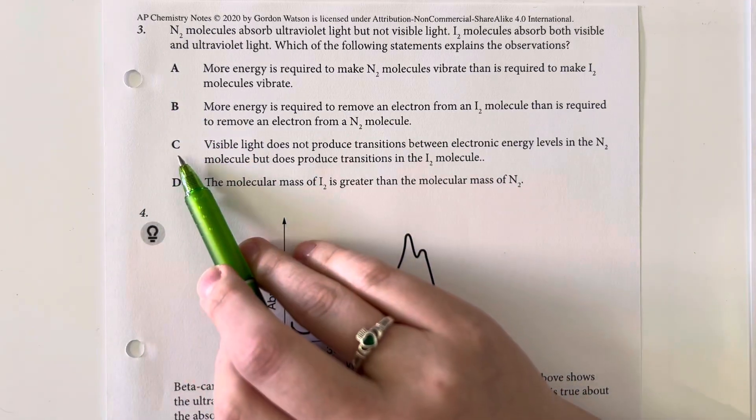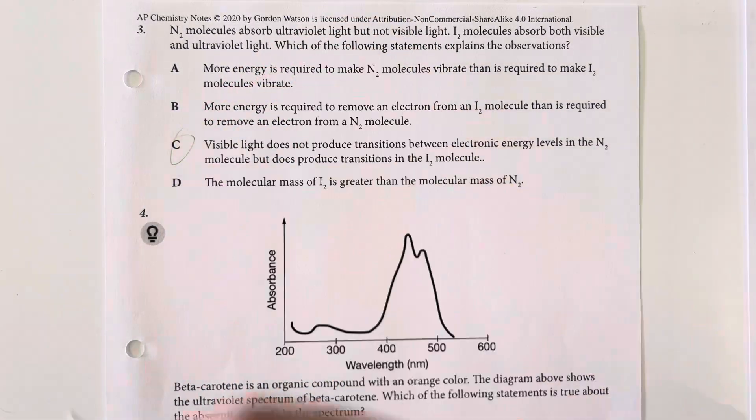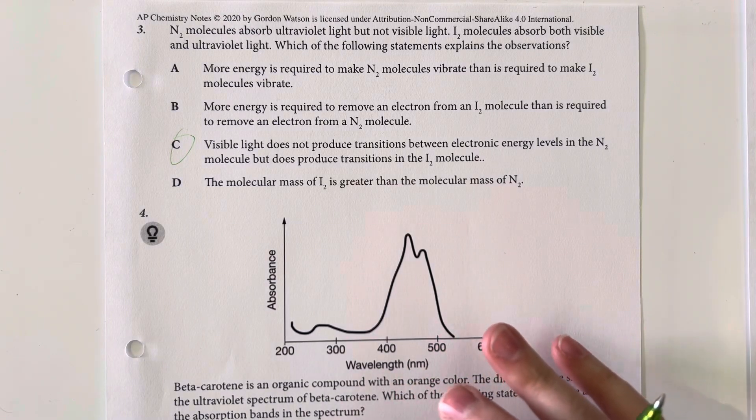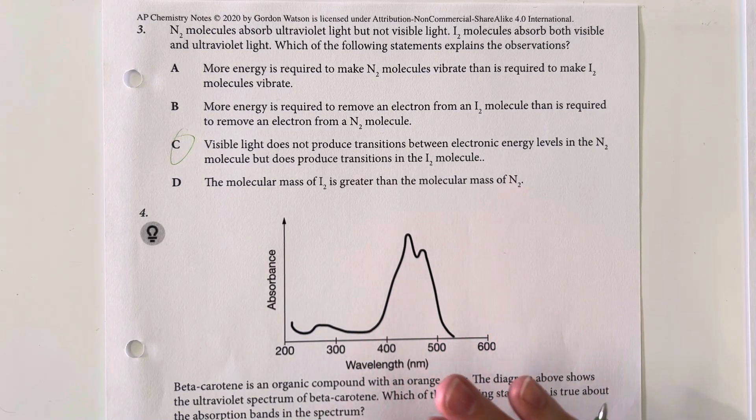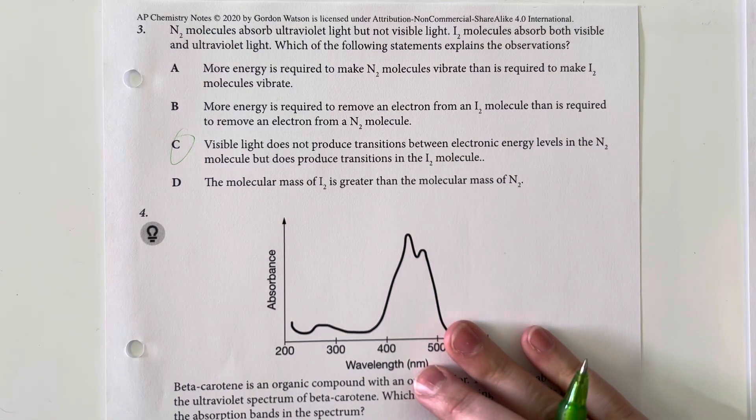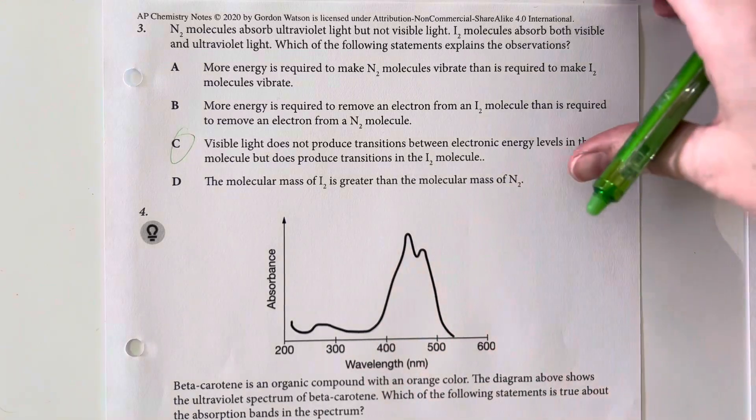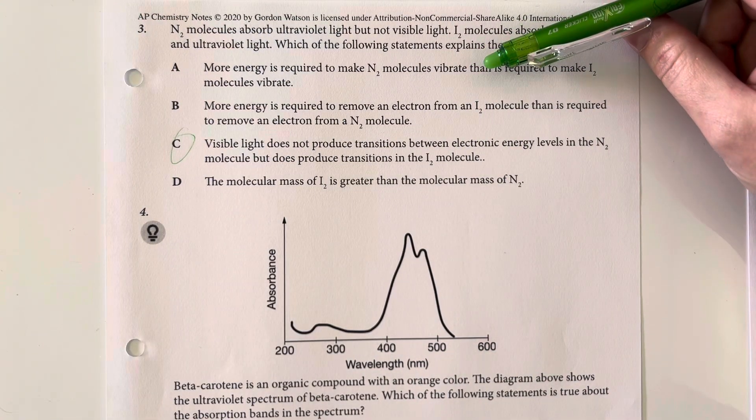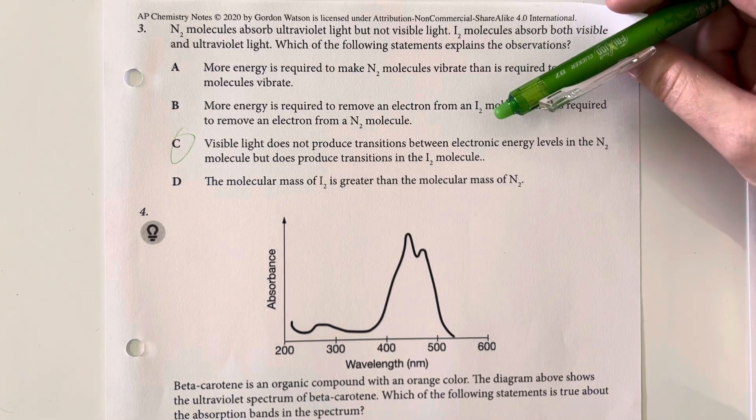So, since visible light does not produce transitions, it doesn't have enough energy to produce transitions between the electronic states in nitrogen, but it can produce it in the iodine molecule. So, if it was able to have enough energy, then it would be absorbed, but it was not.